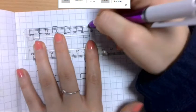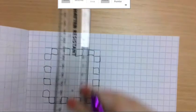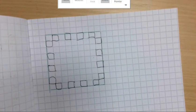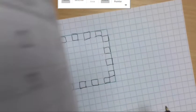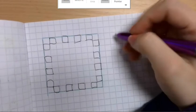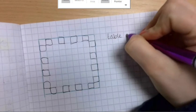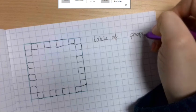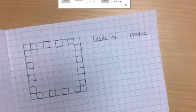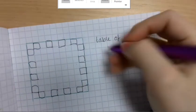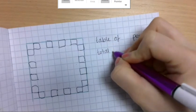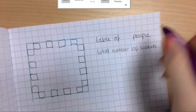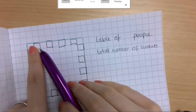So the first thing we need to do is work out how many people are at the table. Keep the writing consistent. So table of how many people are here. I'm going to leave a little gap here because I want you to pause in a second and work that out. And then after that, we're going to work out the total number of sweets.